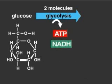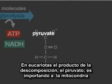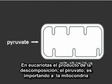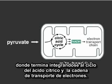In eukaryotes, the breakdown product pyruvate is imported into mitochondria, where it ultimately feeds into the citric acid cycle and the electron transport chain.